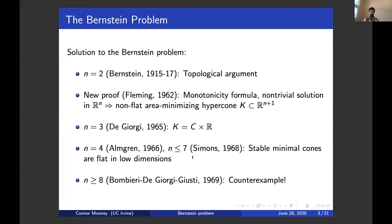Finally, just one year later in 1969, Bombieri, De Giorgi, and Giusti constructed very surprising, beautiful counter examples to the Bernstein theorem. They constructed examples of non-linear entire solutions to the minimal surface equation in R8, which have cubic growth at infinity. I read somewhere that Bombieri, De Giorgi, and Giusti solved this problem basically in three days — they got together and worked very hard nonstop for three days until they cracked it. There was a real sense of urgency to solve the problem at that time.